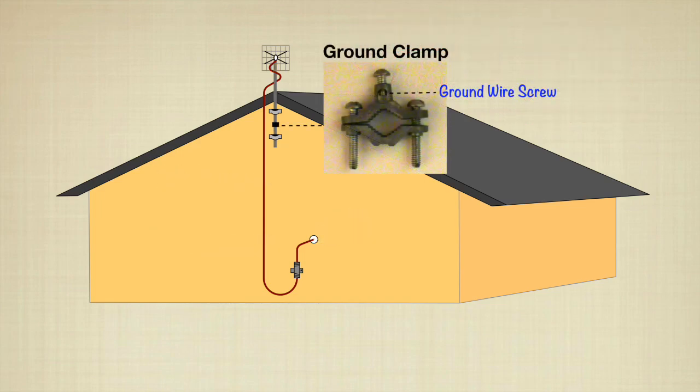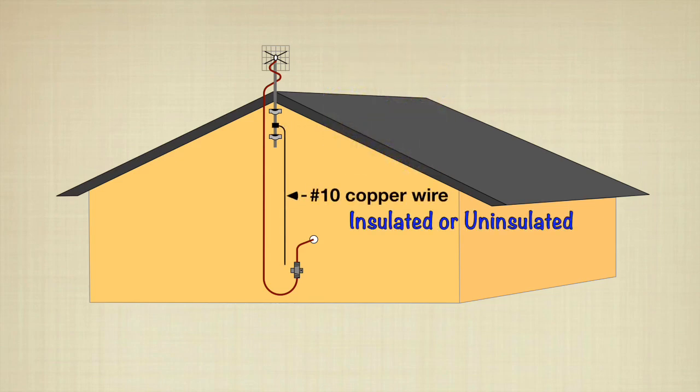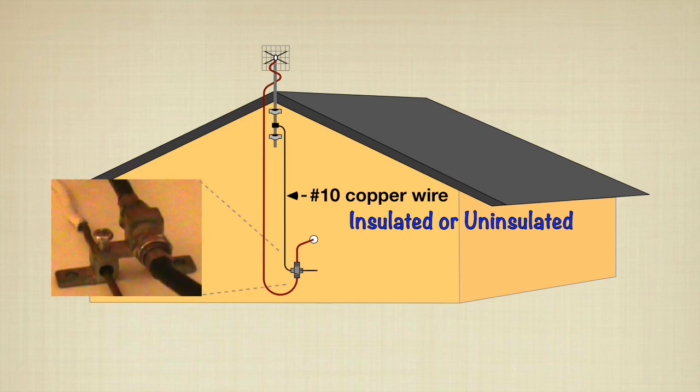Next, attach a ground clamp to the antenna mast. Connect number 10 copper wire to the clamp. It can be insulated or uninsulated. Then run the wire through the coax ground block, making sure the bare copper makes good contact with the block screw.